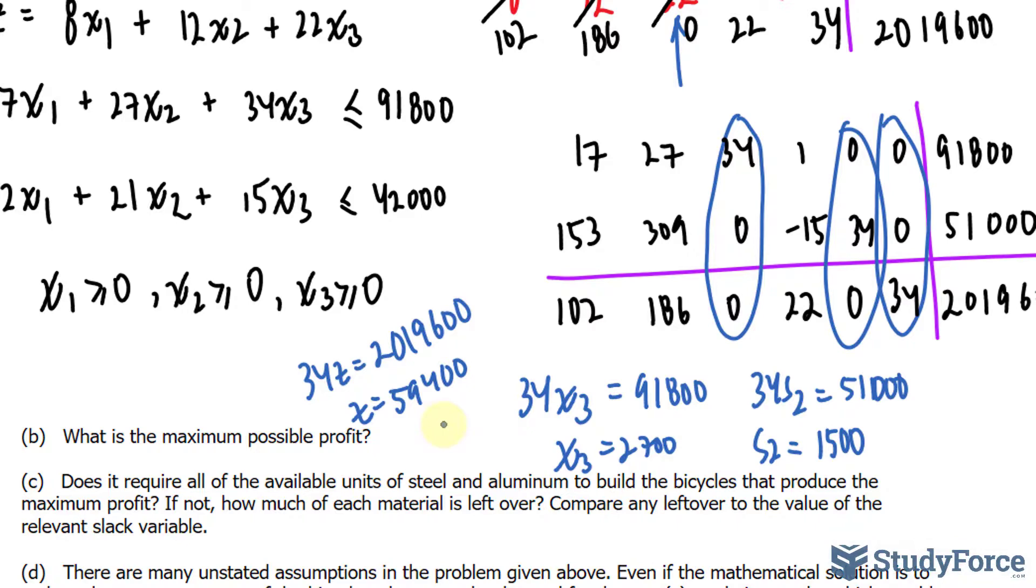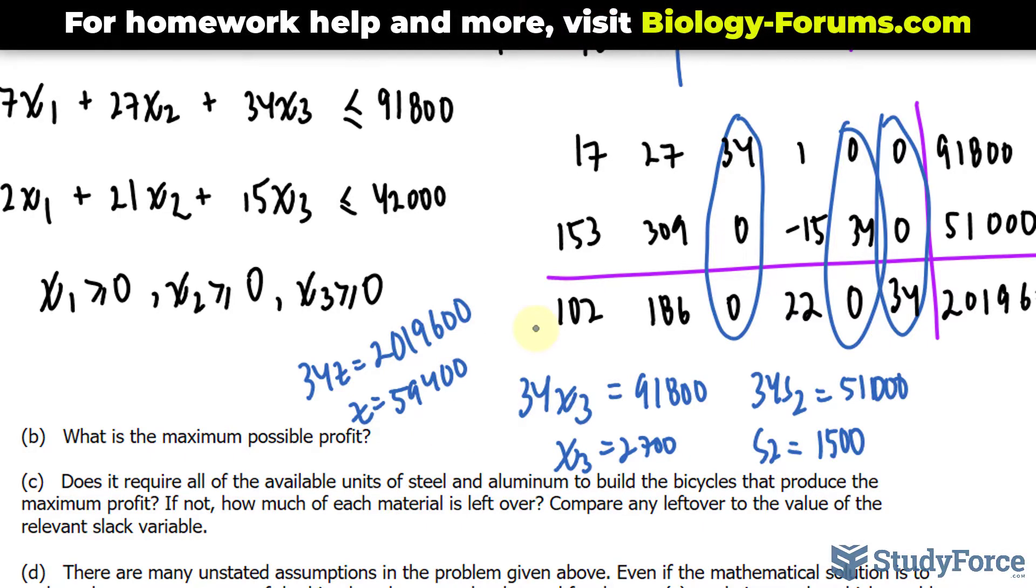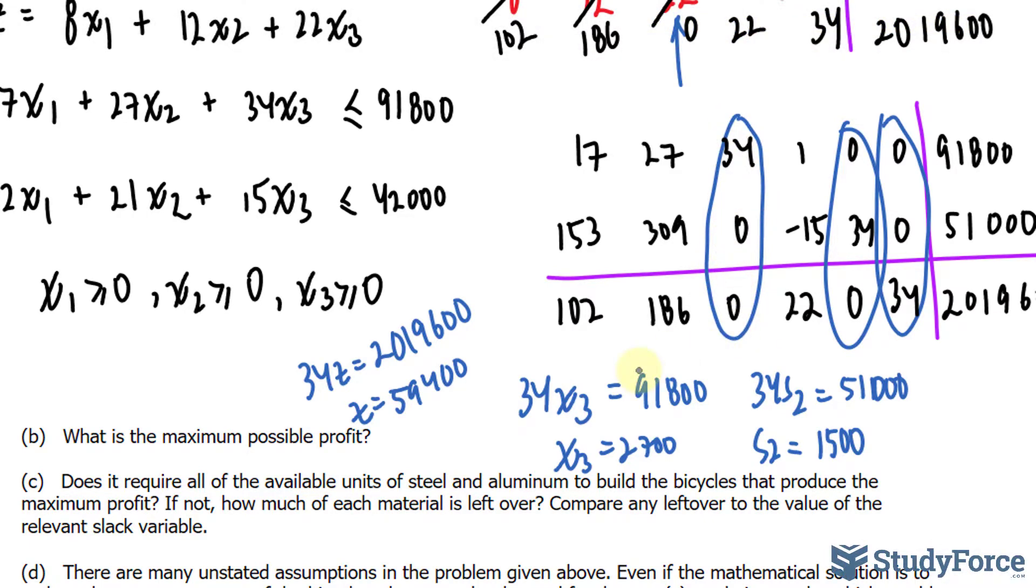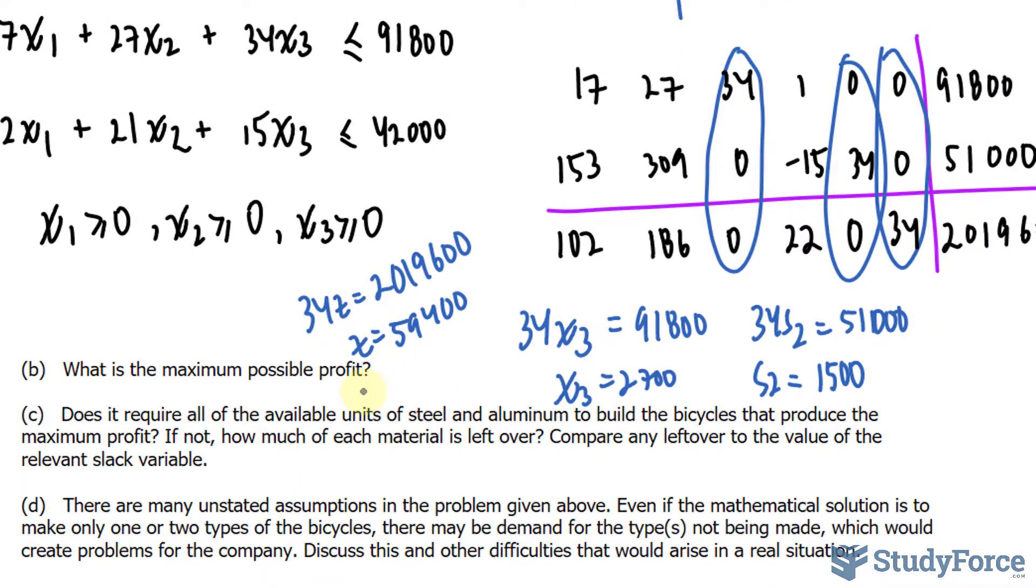So what is this information telling us for this company? It tells us that the company should make zero racing bicycles, zero touring bicycles, and 2,700 mountain bicycles. So if you want to maximize profit, forget about these two columns. And of course, you ignore them because of their configuration. They don't have the number zero, zero configuration as these ones did. You make none of those and only make 2,700 of the mountain bicycles. In question B they ask, what is the maximum possible profit? And for that, well, you look at Z. Z here was 59,400. That's the maximum profit that this company can bring in.